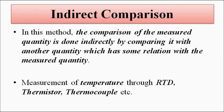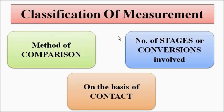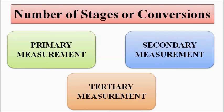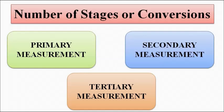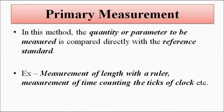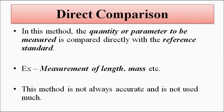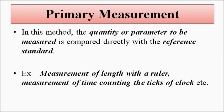The second category is the number of stages or conversions involved, which can be divided into three types: primary measurement, secondary measurement, and tertiary measurement. Primary measurement is essentially direct comparison — the unknown parameter is directly compared with a reference standard. Examples are the weighing scale, length measurement with a ruler, and counting time using clock ticks. Primary measurement and direct comparison are the same thing.